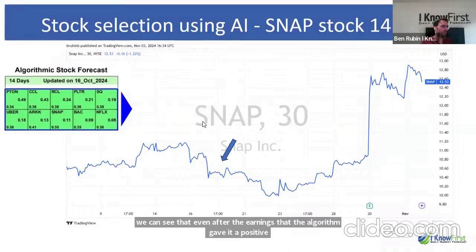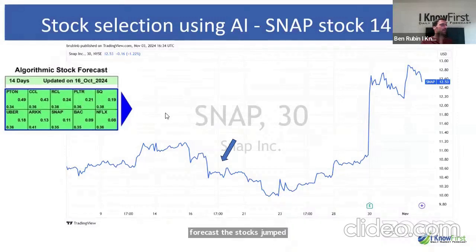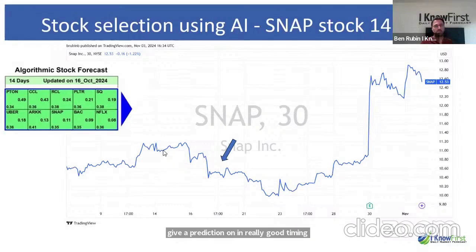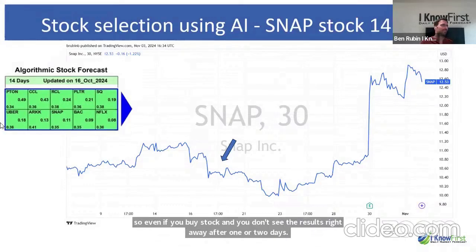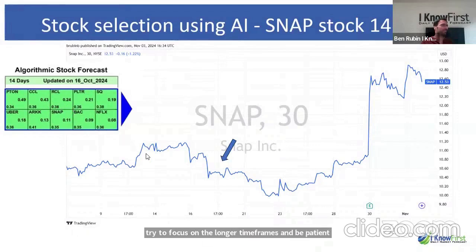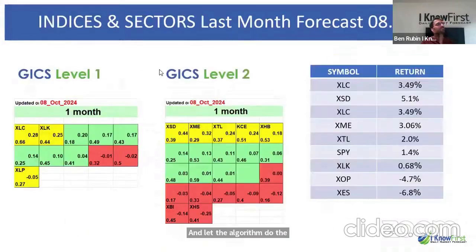We have many stocks where the algorithm provides well-timed predictions. Even if you buy a stock and don't see results right away after one or two days, be patient. As we said, the longer the time frame, the better the predictability. Try to focus on the longer time frames, be patient, and let the algorithm do its work.